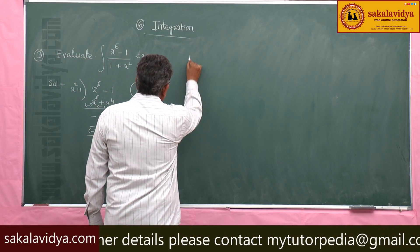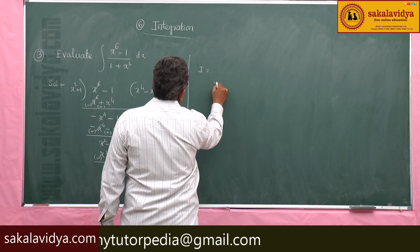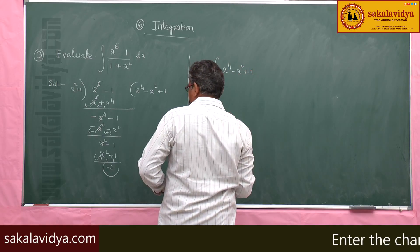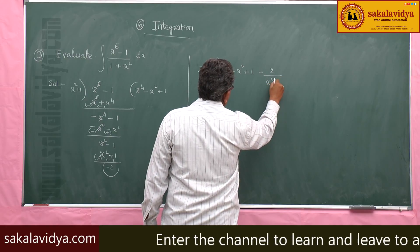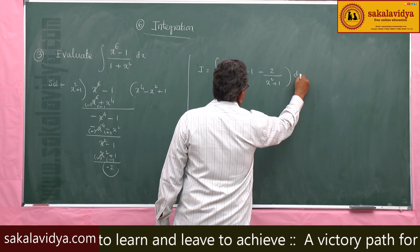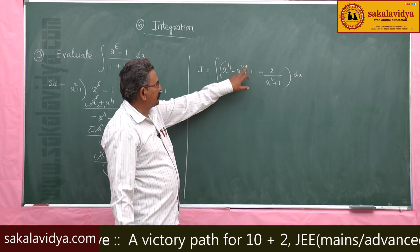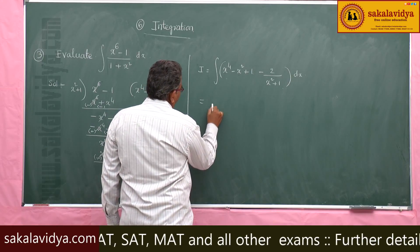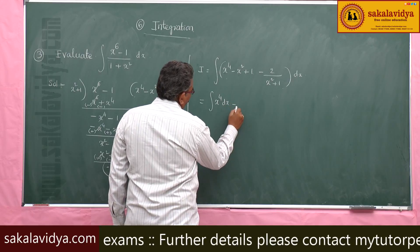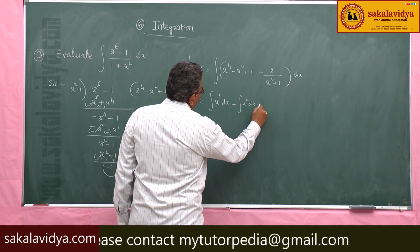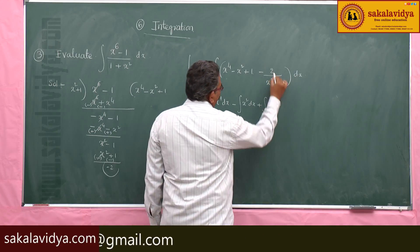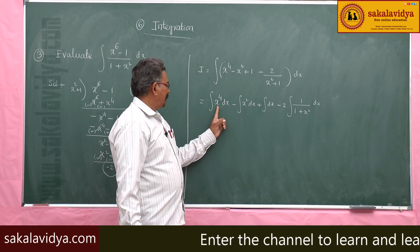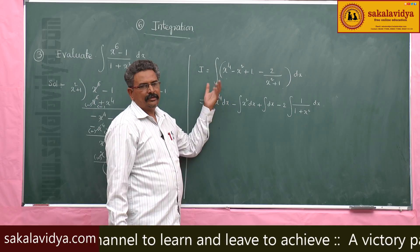x² plus 1; change the sign — minus — these two cancel, leaving remainder -2. So this integral I can be written as integral of (x⁴ - x² + 1 - 2/(x² + 1)) dx. Now we have four functions separated by plus or minus signs.